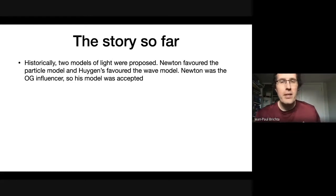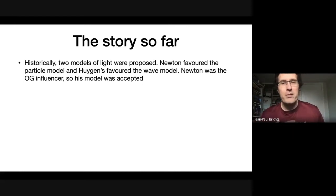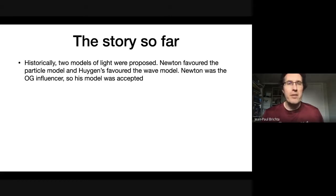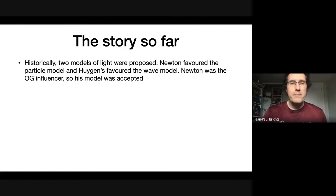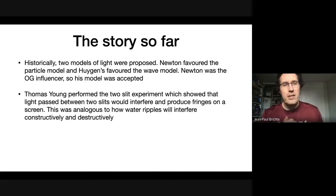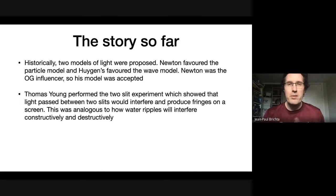Because Newton had more fame and a larger following, Newton's model was the one that was accepted for several hundred years — everyone within science was using a particle model. However, things changed in 1801 when Thomas Young performed his two-slit experiment, and he made observations which simply could not be explained with the particle model.